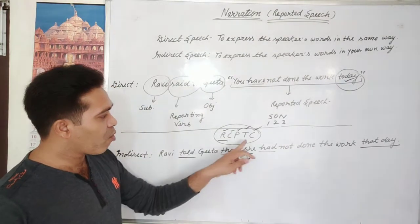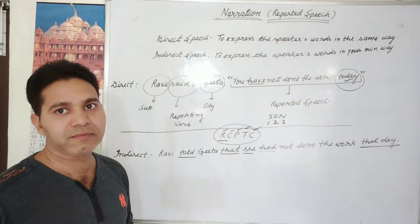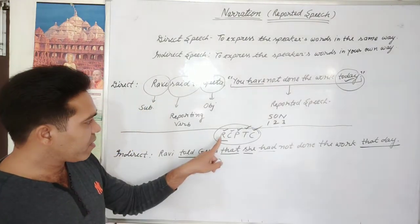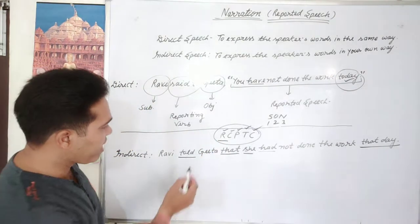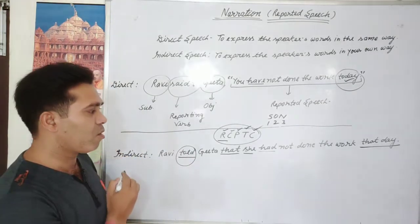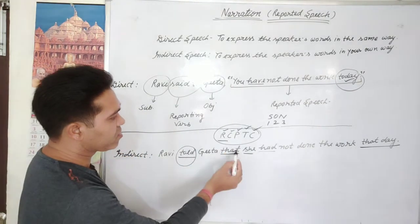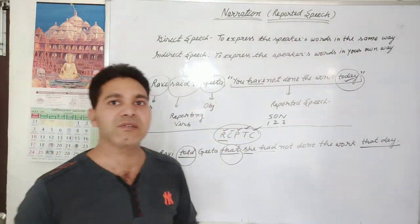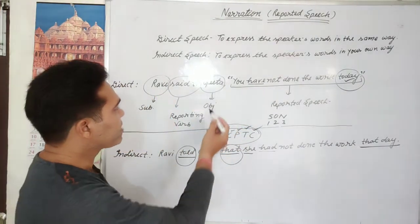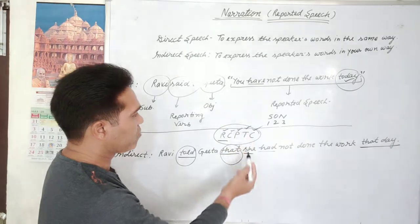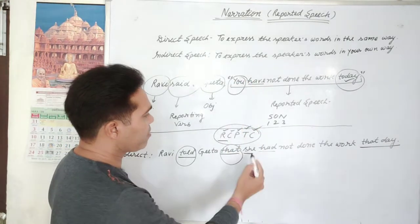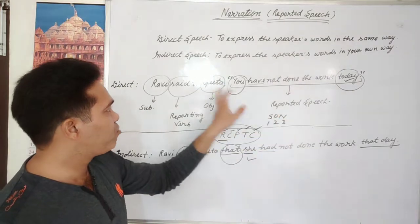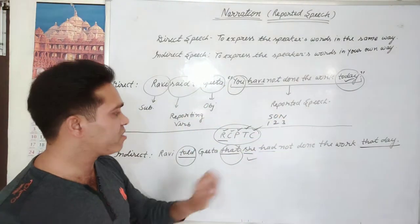So, once again according to RCPTC: Reporting verb — 'said to' changed to 'told'. Conjunction — we used 'that', because it's an assertive sentence. Pronoun — 'you' changed to 'she', because second person follows the object. Object is Gita, who is female, so 'she'.